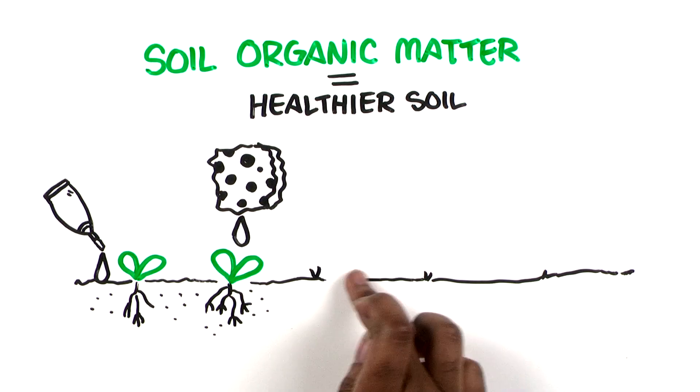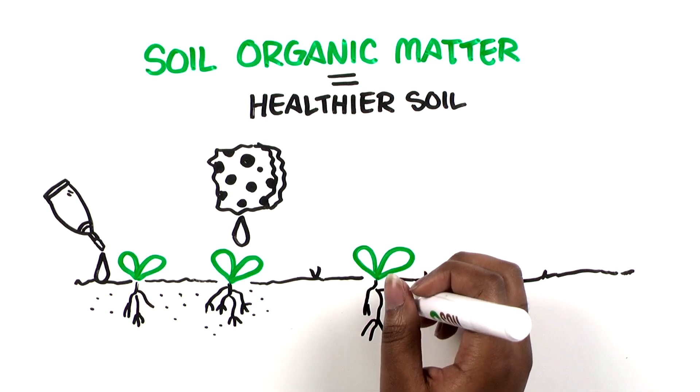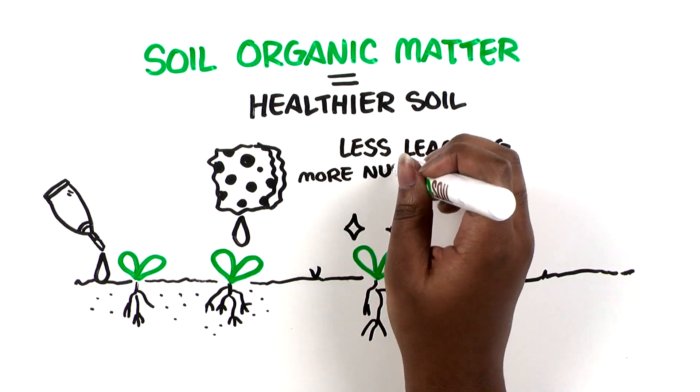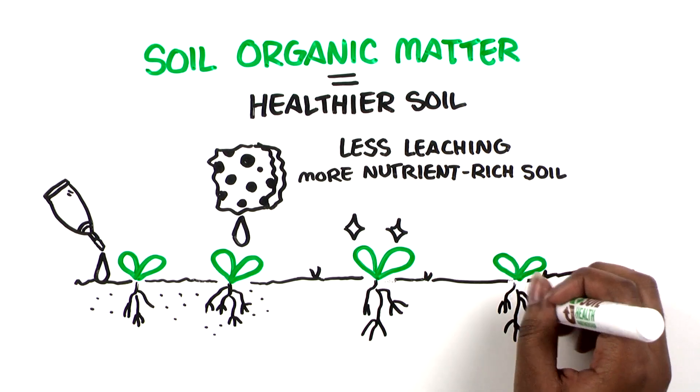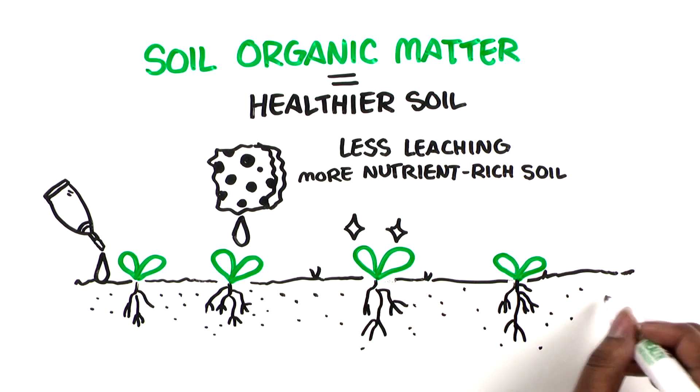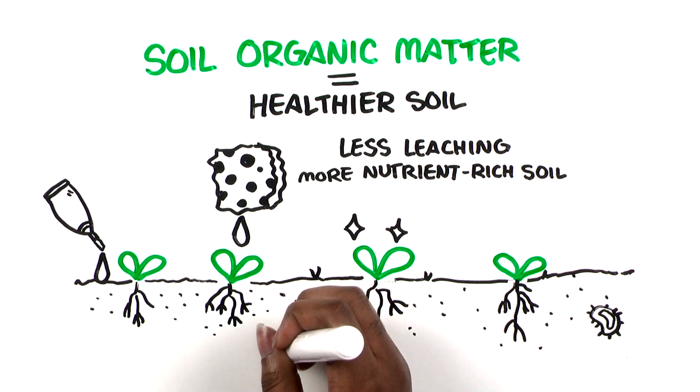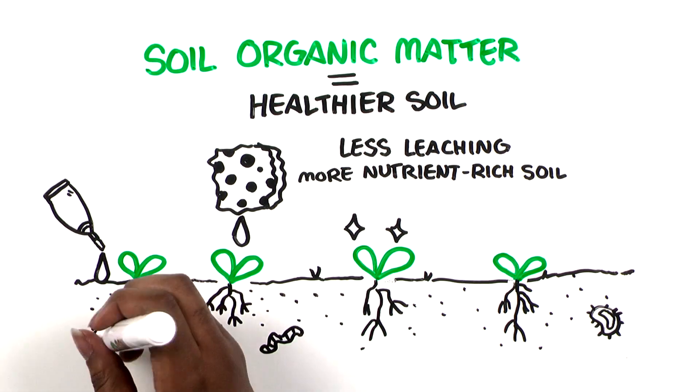It stores nutrients that plants need and releases them over time, resulting in less leaching and more nutrient-rich soil. And soil organic matter is where helpful bacteria and fungi live, organisms which can increase crop yield potential over time.